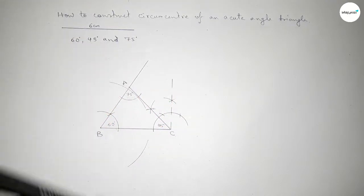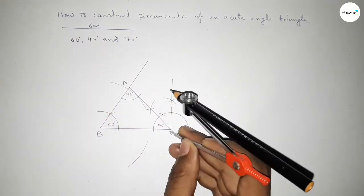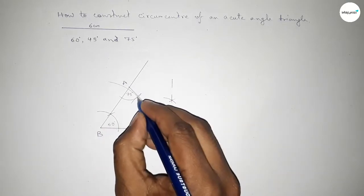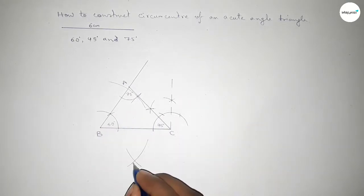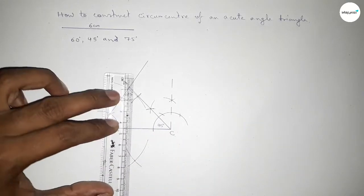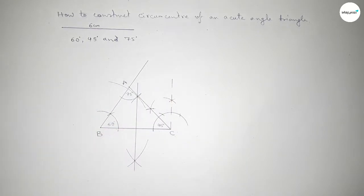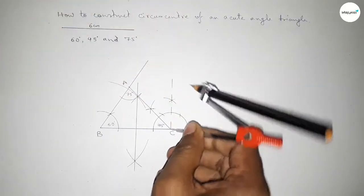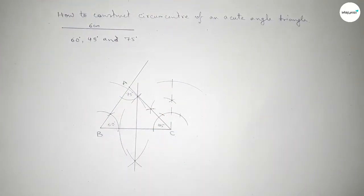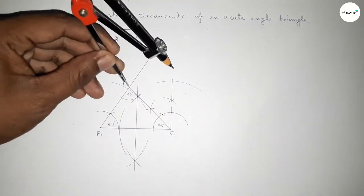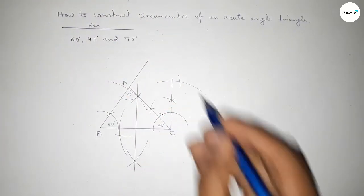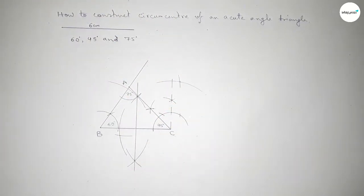Taking greater than half of BC and drawing arcs — both curves intersect at two points. Joining this bisector. Next we have to bisect line AC. Putting the compass and taking greater than half of AC, drawing an arc with the same length and cutting here — both curves intersect at two points. Joining this bisector.